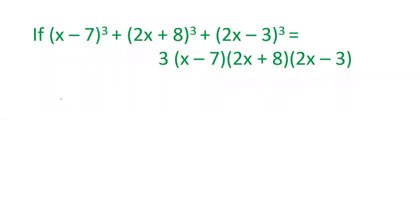Before solving the question, let me give you a formula: a³ + b³ + c³ - 3abc = (a+b+c)(a² + b² + c² - ab - bc - ca).